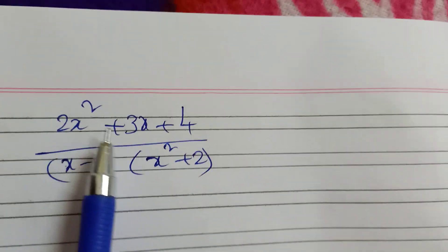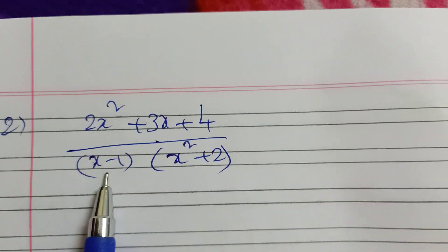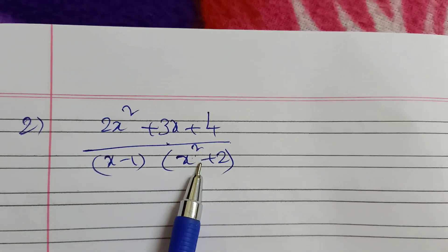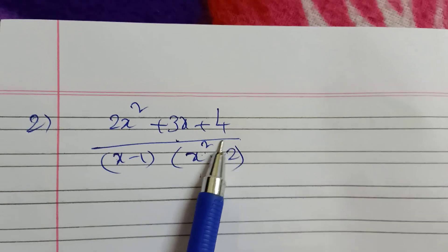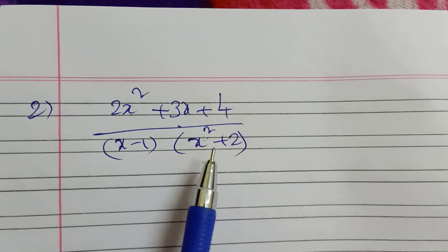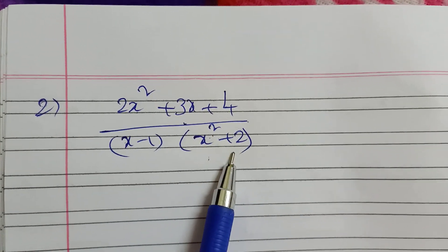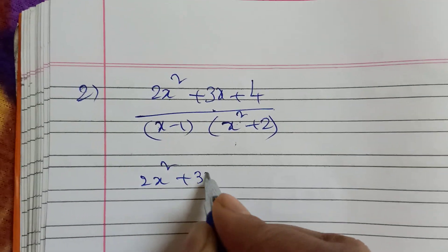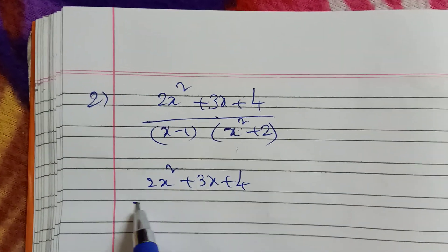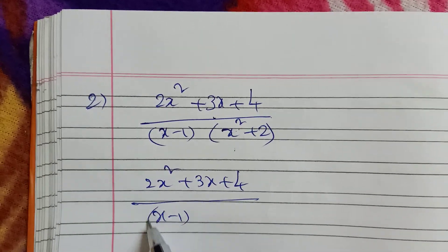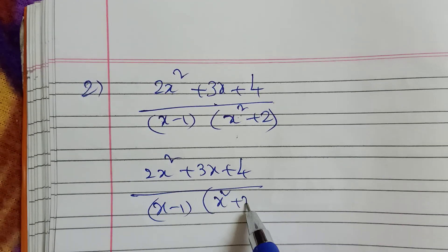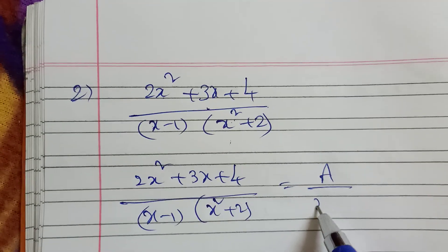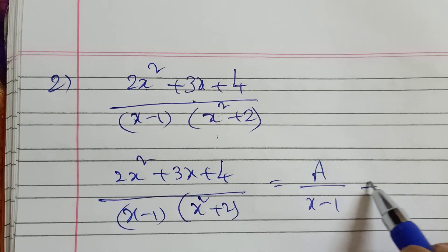Now the next problem: (2x squared plus 3x plus 4) divided by (x minus 1) into (x squared plus 2). Here x squared plus 2 is a quadratic expression. We write: A by (x minus 1) plus a linear expression over the quadratic factor.